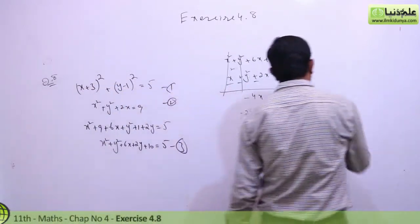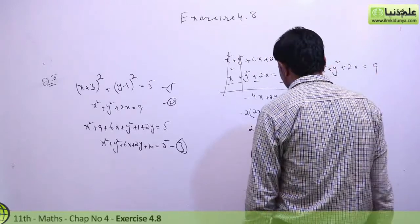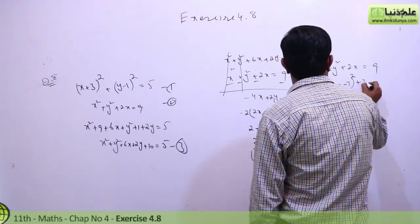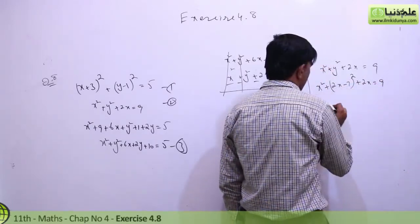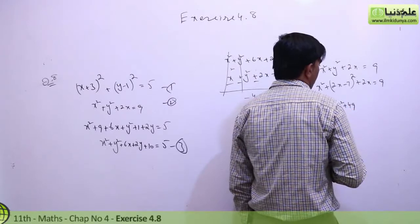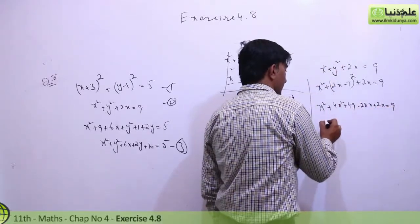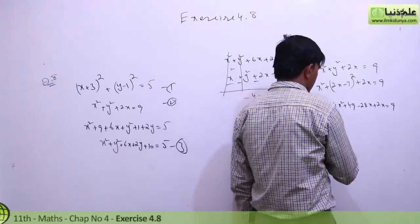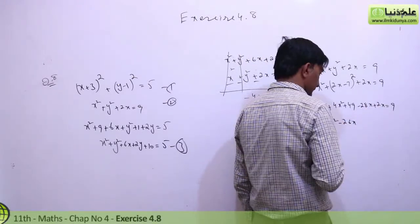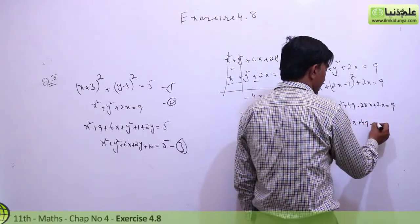Now this y equal to 2x minus 7 is substituted into equation 2. Putting 2x minus 7 into x square plus y square plus 2x equal to 9: x square plus 4x square plus 49 minus 28x plus 2x equal to 9.